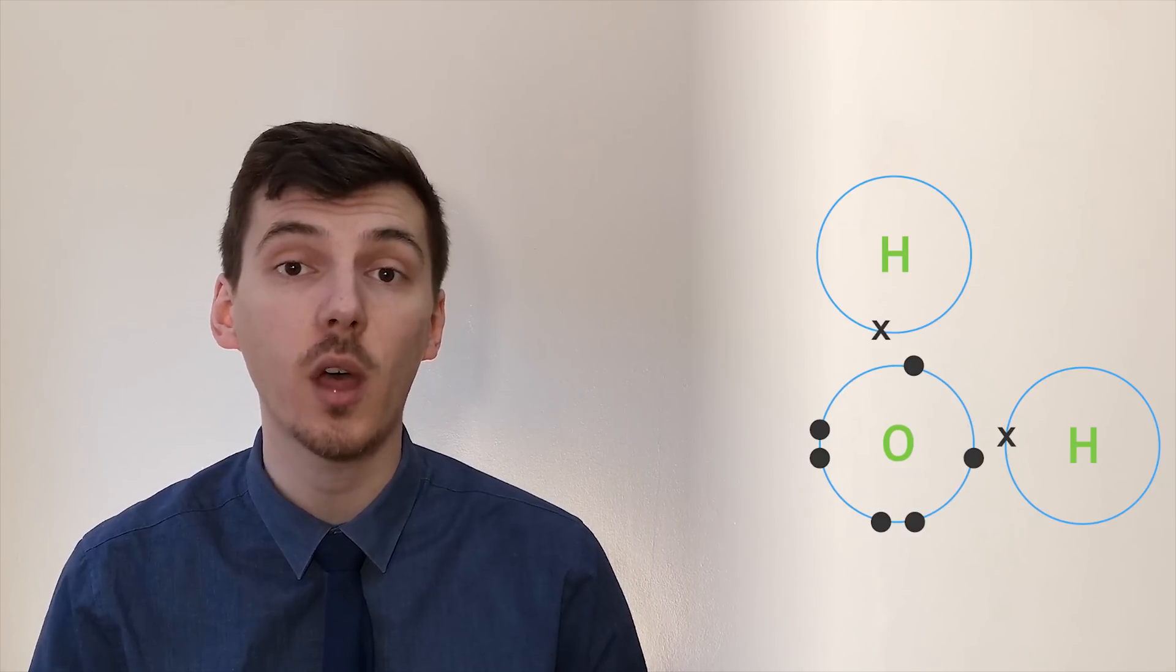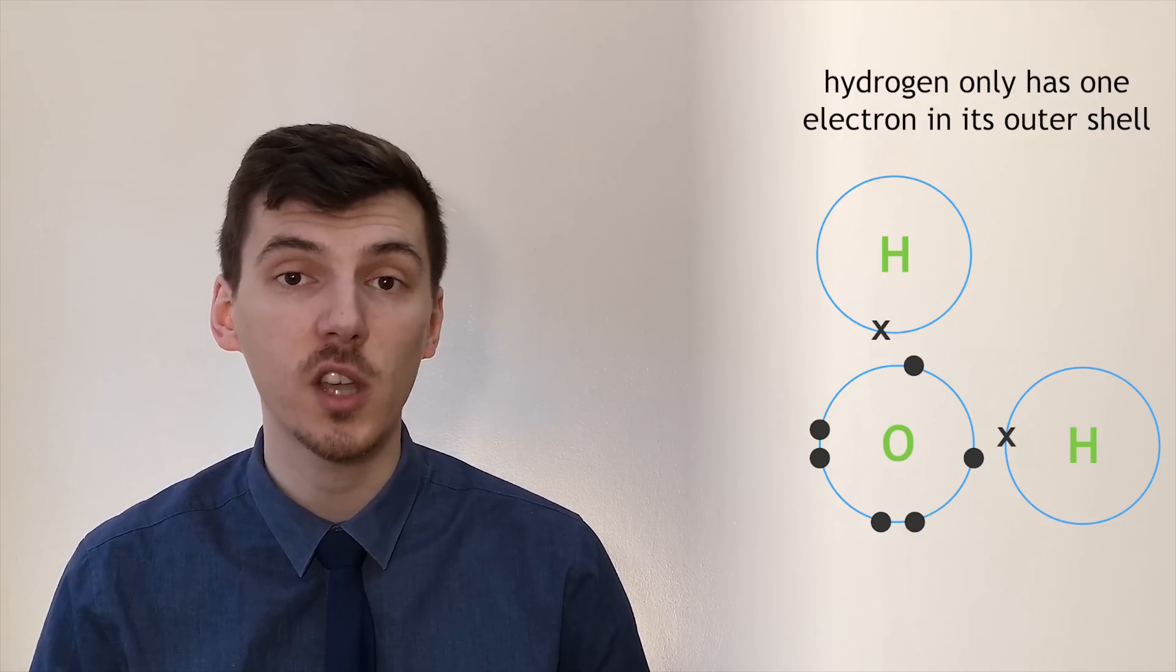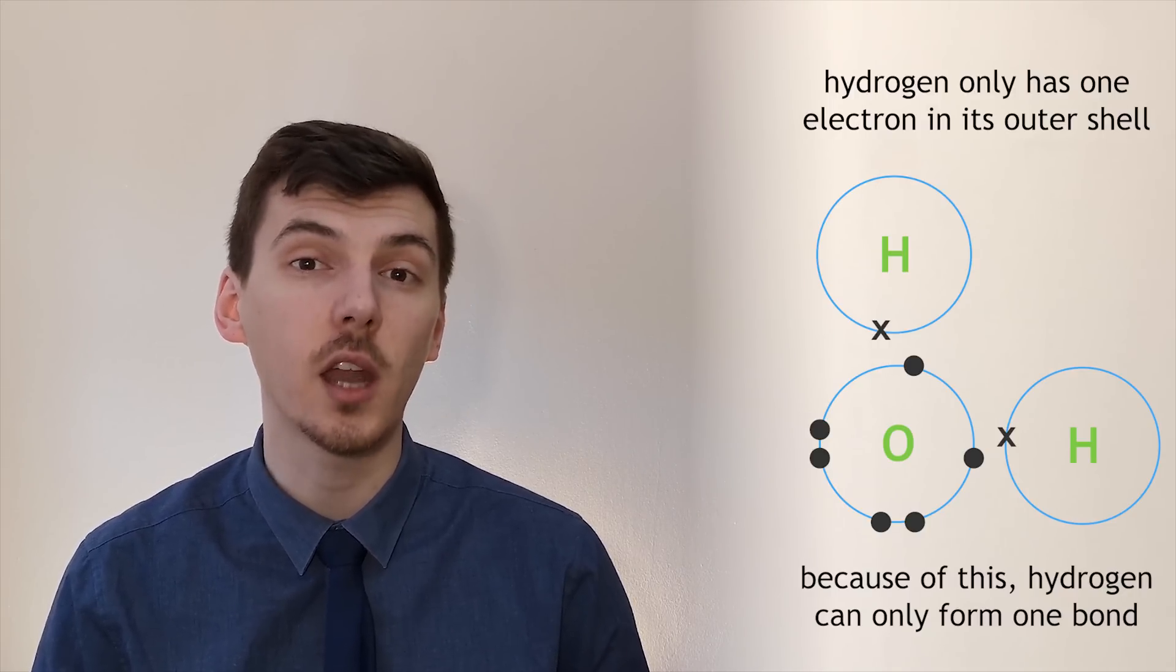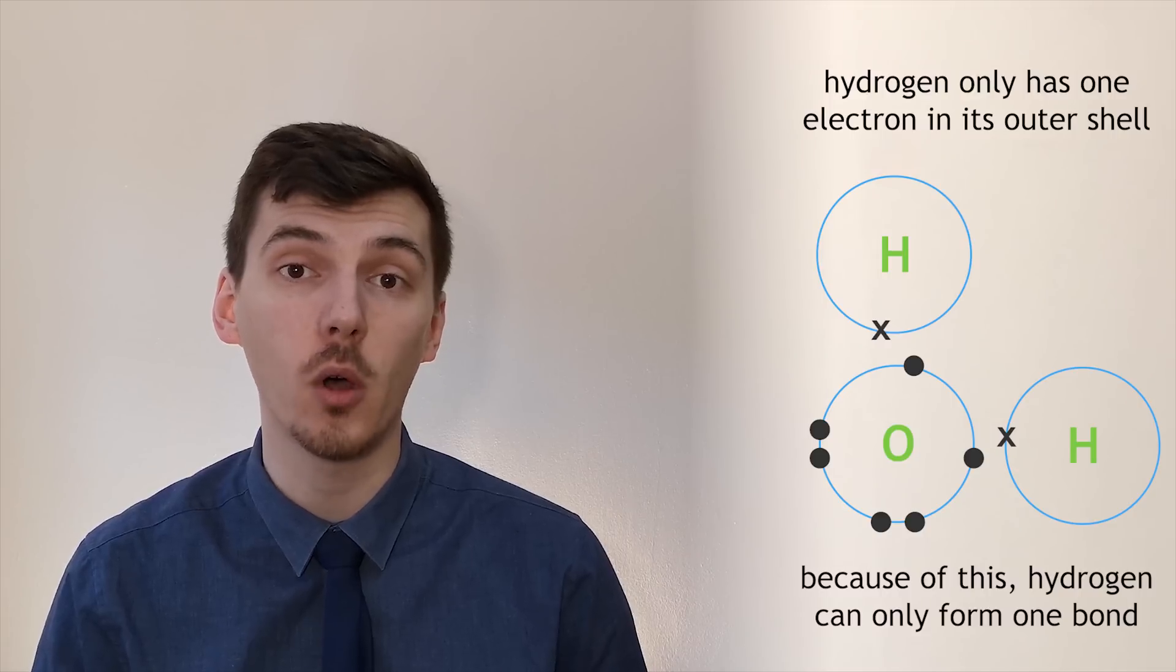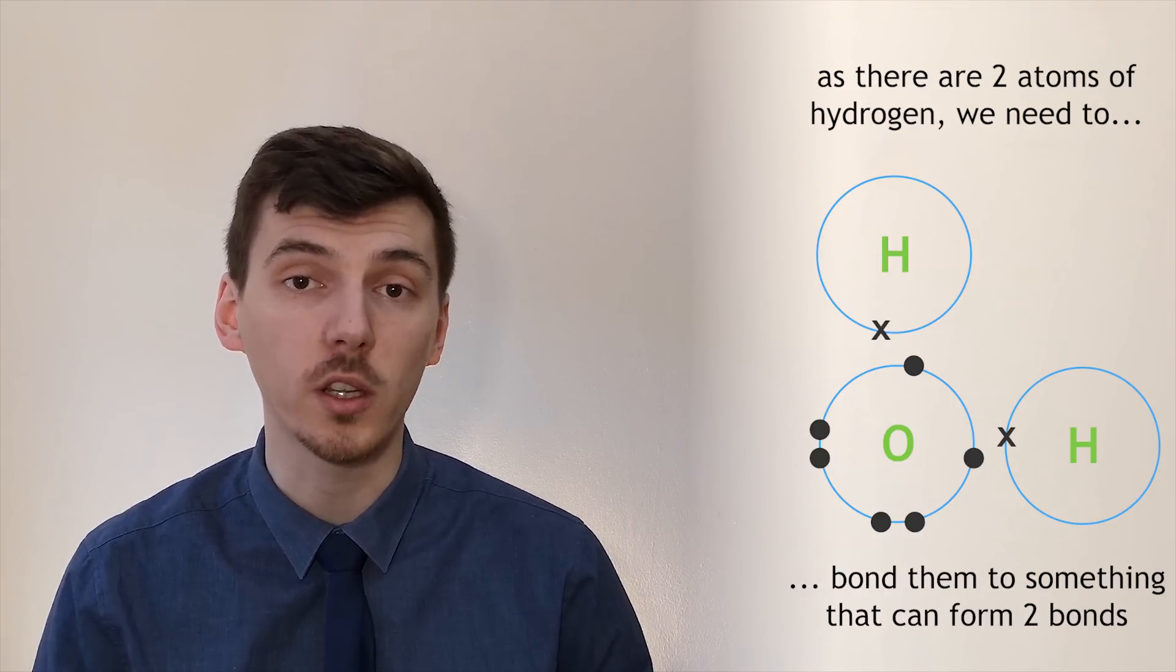We can make things a little bit more complicated by having a go at drawing the dot and cross diagram for water. We've now got two hydrogen atoms and one oxygen atom. We know that hydrogen has only got one electron in its outer shell. At this point it may be worth noting that because hydrogen only has one electron in its outer shell, it can only form one covalent bond. Therefore we're going to need to bond it to something that can form more than one covalent bond.